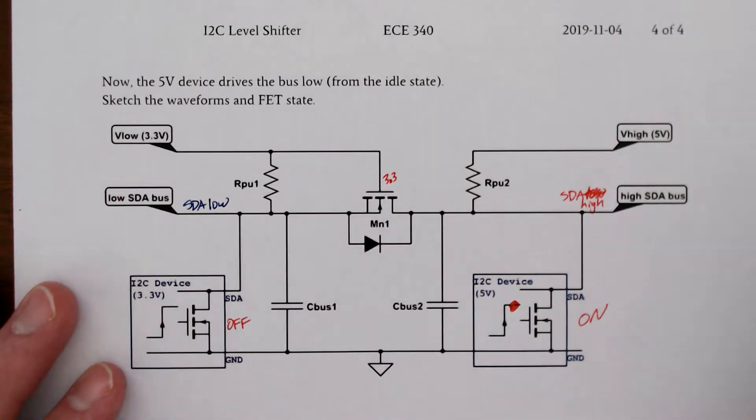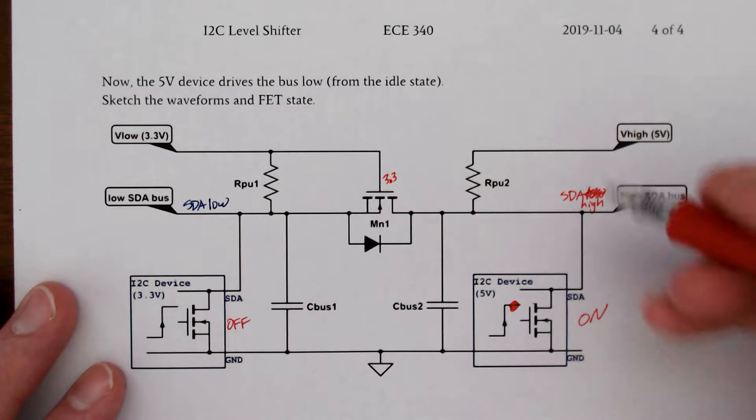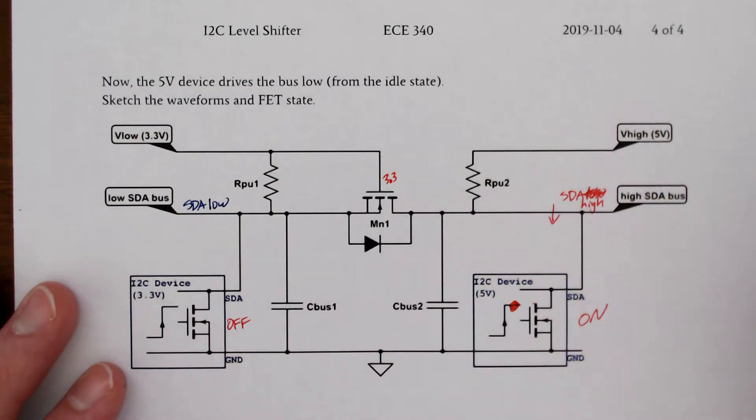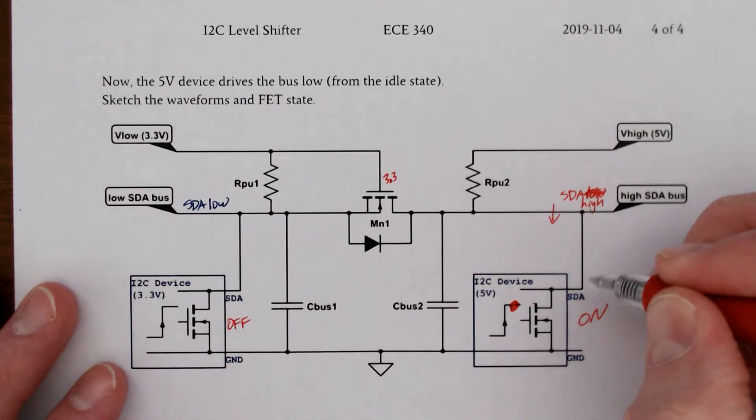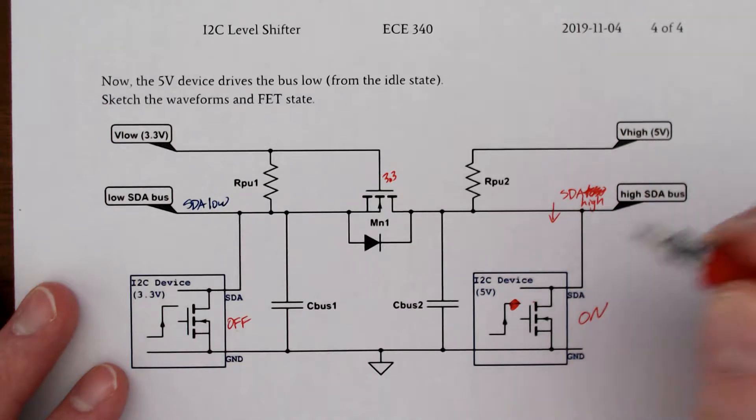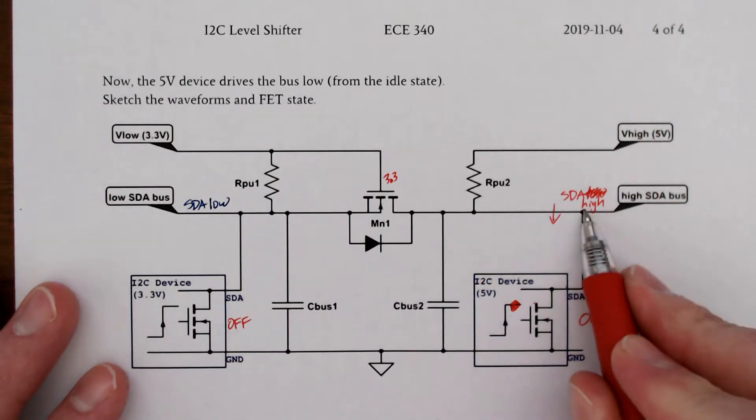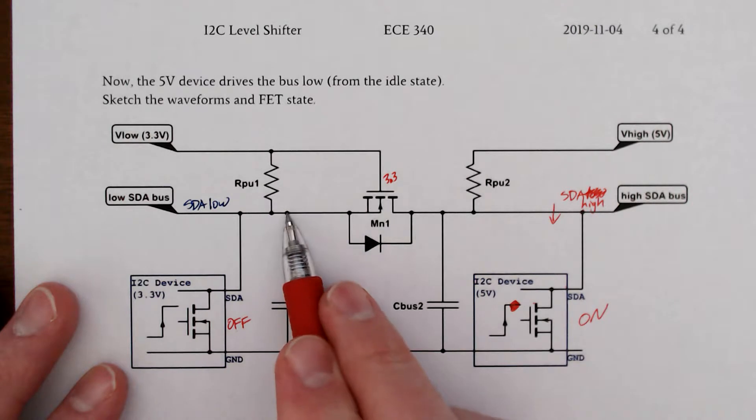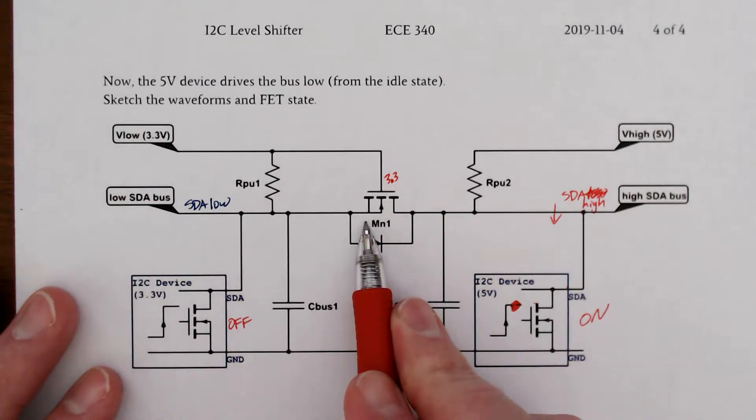We go from the idle state, and I want this device to pull my node down to zero. We see that eventually that's going to happen. But what we really want to happen is not just that this node goes low, but this node goes low. And remember, that's on the other side of this transistor.